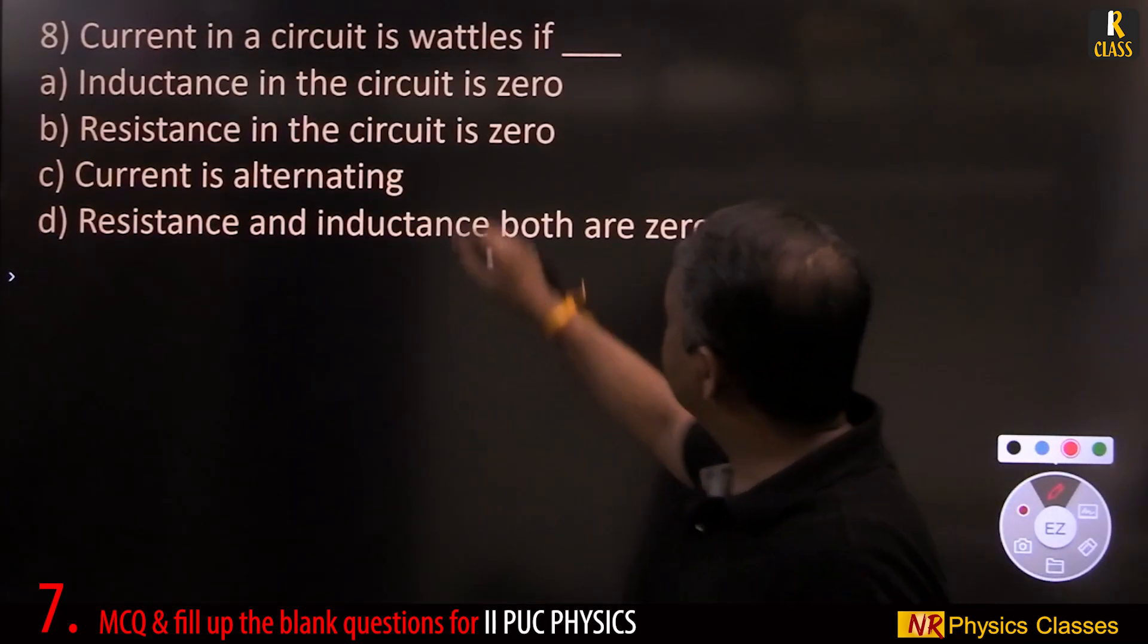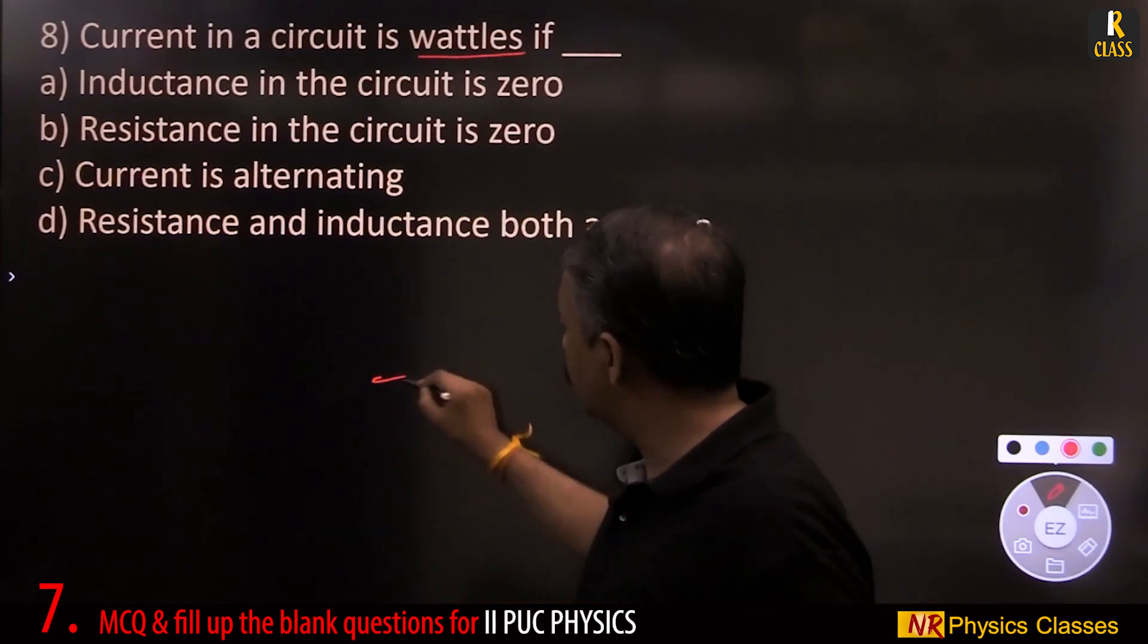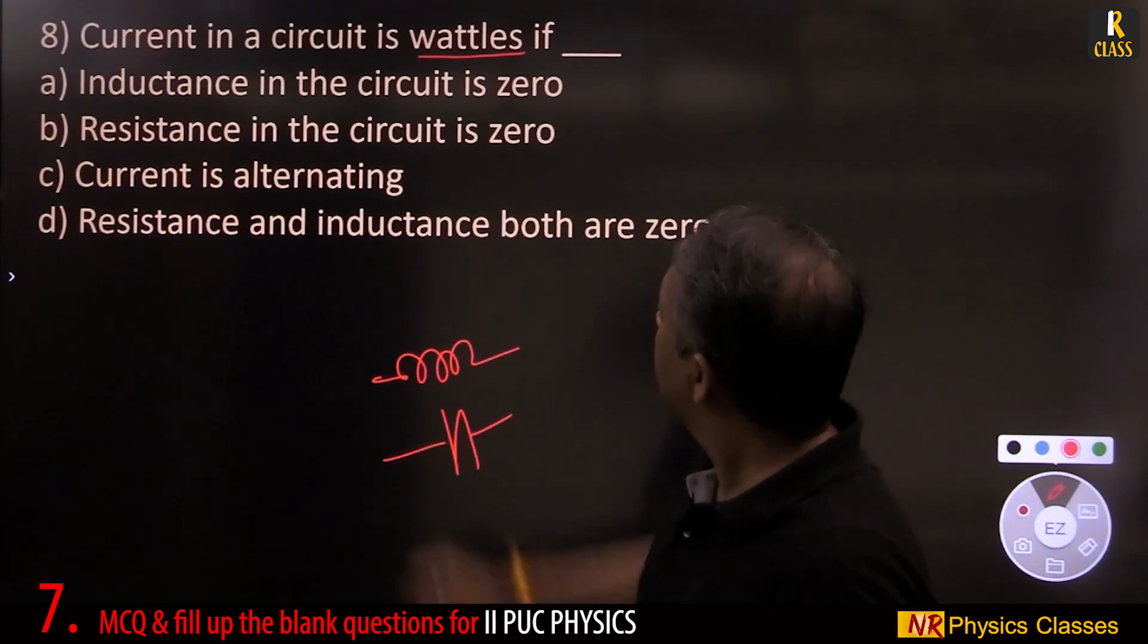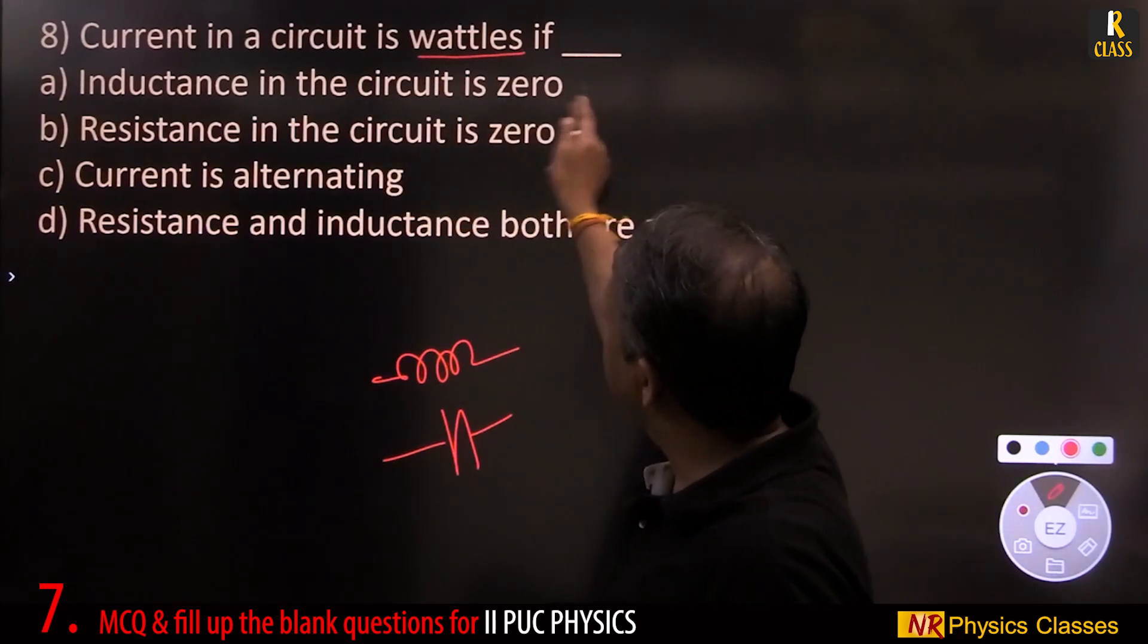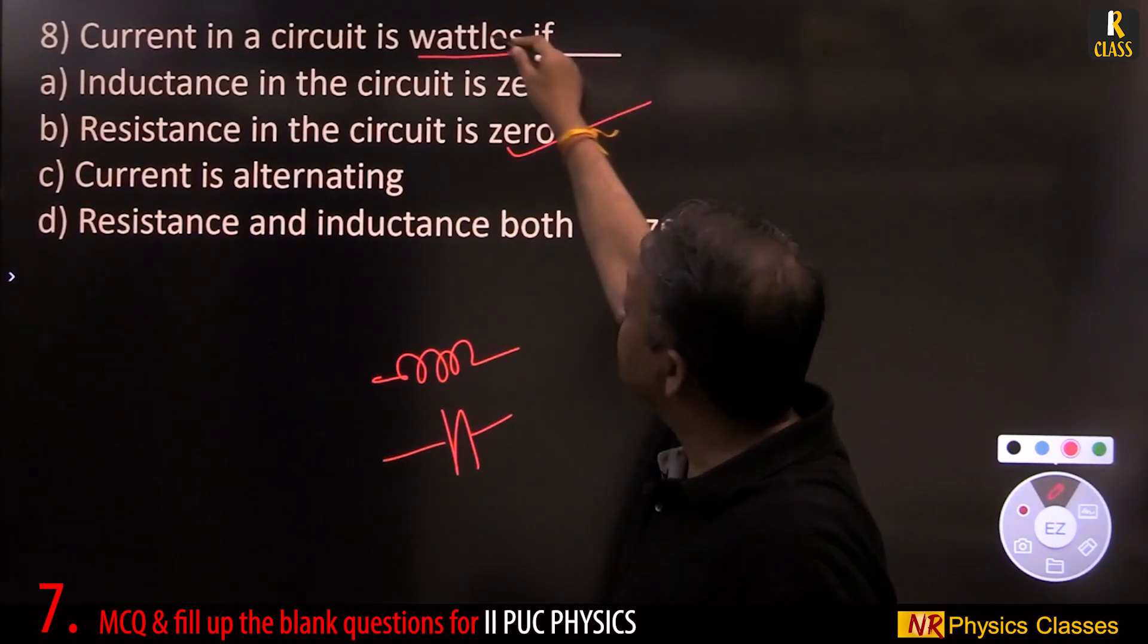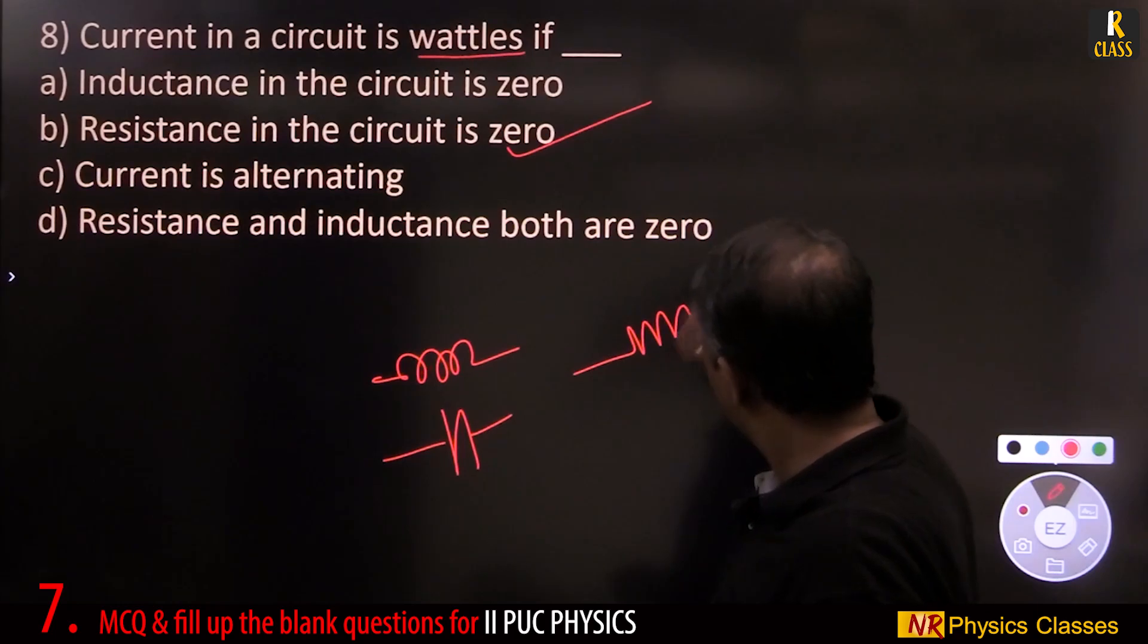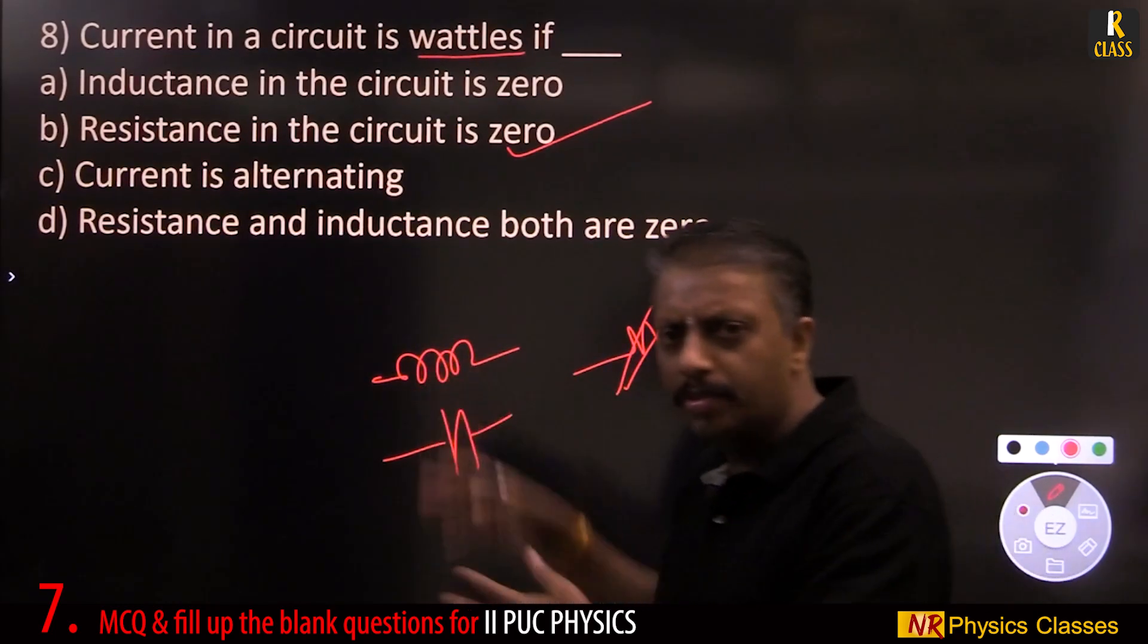Current in the circuit is wattless. Wattless current is only through inductor or capacitor. If resistance in the circuit is 0, then there is wattless current. If resistance is 0, then it is either inductor or capacitor or combination of those two.